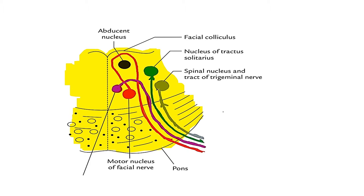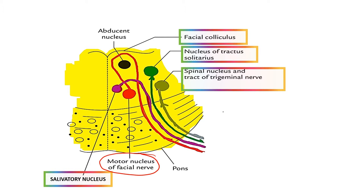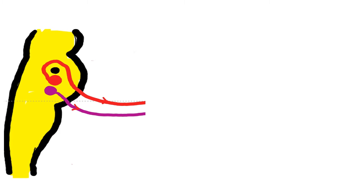This cross-section shows all the nuclei. We have the abducent nucleus, then the motor nucleus of the facial nerve from which motor fibers form the facial colliculus. Then we have the salivatory nucleus in purple, the nucleus of tractus solitarius in green, and the spinal nucleus tract of the trigeminal nerve. Let us understand each of these nuclei individually.